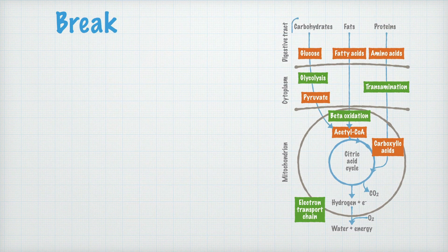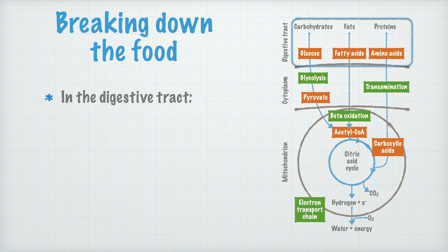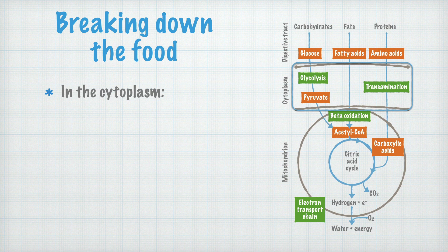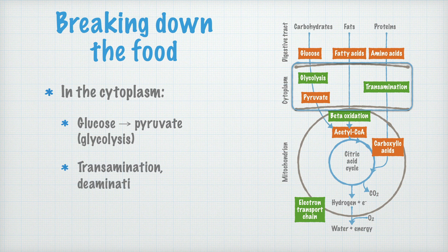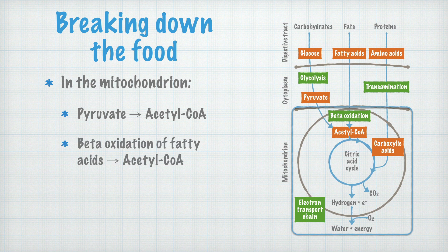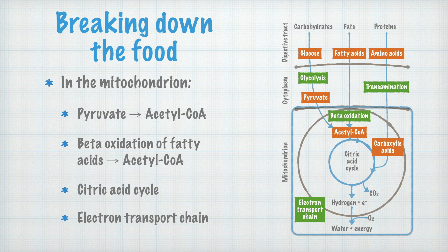Let's write something about this too. In the digestive tract, the first breaking down of the food takes place. Large carbohydrates are broken down into simple carbohydrates, mainly glucose. Fats are broken down into fatty acids, and proteins into amino acids. Then, in the cytoplasm, glucose is broken down into pyruvate in the process called glycolysis. Also in the cytoplasm, transaminations and deaminations of amino acids take place, yielding carboxylic acids and amines. Last of all, inside the mitochondrion, the pyruvate from glycolysis is oxidized into acetyl-CoA, and from the beta-oxidation of fatty acids, acetyl-CoA is also formed. In the mitochondrion, the citric acid cycle and the electron transport chain also take place, in which the energy from the oxidation reactions is converted into ATP.